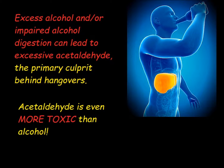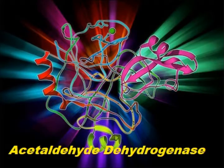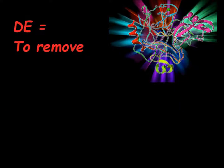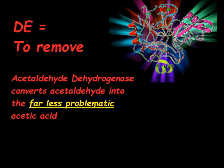Acetaldehyde is exponentially more toxic than alcohol. It is broken down by the enzyme acetaldehyde dehydrogenase — the prefix 'de' means to remove, and 'hydrogen' comes next — so this enzyme removes a hydrogen atom and transforms acetaldehyde into acetic acid. Women actually produce much less of this enzyme than men do, and many Eastern Asians and American Indians produce a form of this enzyme that is far less effective at breaking down alcohol than Caucasians. As a result, they will become much more intoxicated on less alcohol.